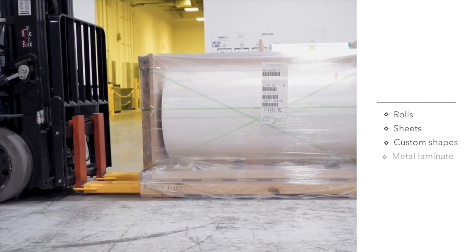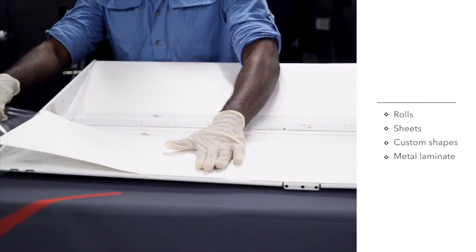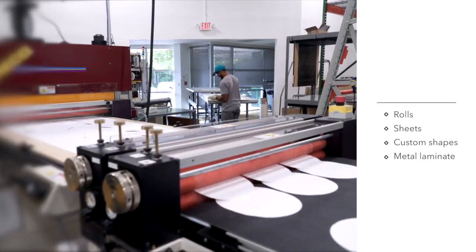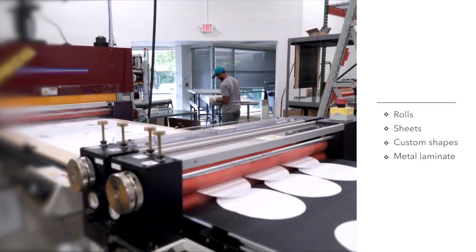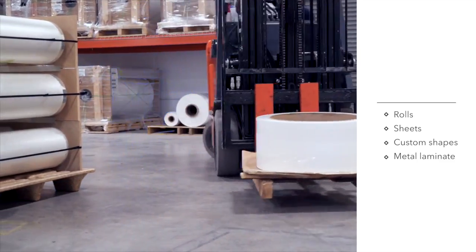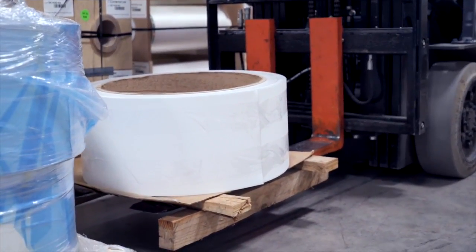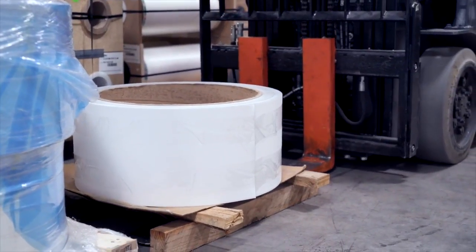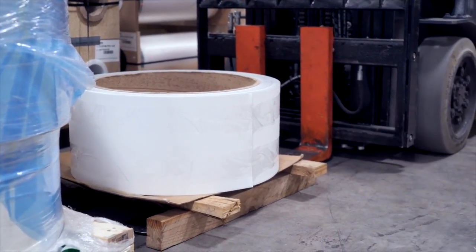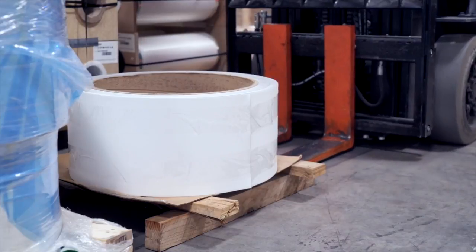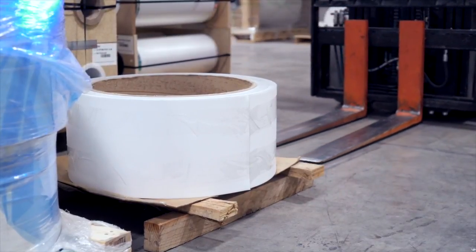Bright White Films are available in rolls, sheets or custom cut parts with or without a pressure sensitive adhesive. Bright White Reflectors are also available laminated to aluminum or steel as either sheets or coils. This range of available formats allows for easy incorporation of Bright White Reflector products into a wide variety of assemblies.